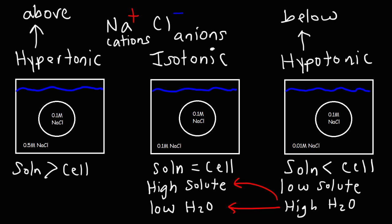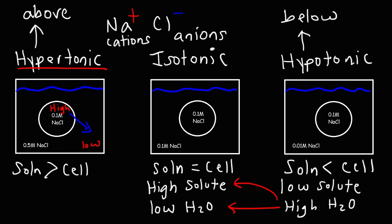Let's start with the hypertonic solution. Water flows in both directions, but the concentration of water inside the cell is high and outside is low — a low solute concentration corresponds to a high water concentration. So the net movement of water will be out of the cell, as there are more arrows pointing outward than inward. The net result is that water comes out of the cell, and as a result the cell is going to shrivel and get smaller.